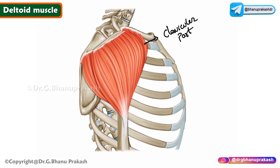The posterior part of the deltoid is called the scapular part. Some authors also refer to the three parts as the clavicular part, acromial part, and scapular part — where the middle part, which is the bulkiest, is called the acromial part. These are the three parts of the deltoid.